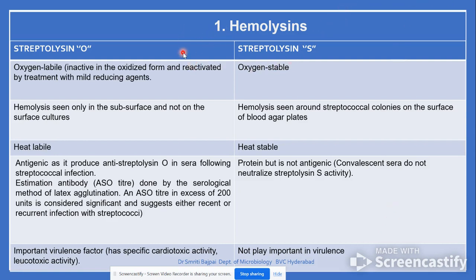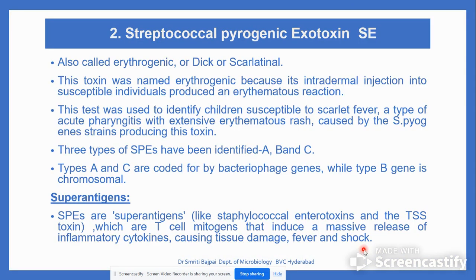Comparing streptolysin O and S: streptolysin O is oxygen-labile (hence 'O'), while streptolysin S is oxygen-stable (hence 'S'). Streptolysin O shows hemolysis only subsurface, is heat-labile, and is antigenic — playing an important role in virulence. Streptolysin S shows hemolysis on the surface around colonies, is heat-stable, is not antigenic, and does not play a role in virulence.